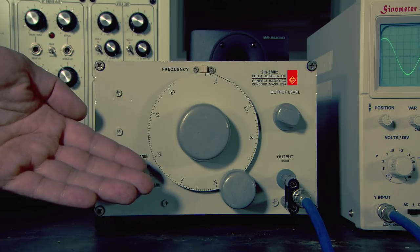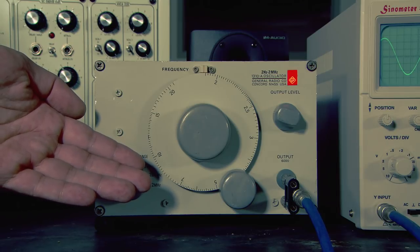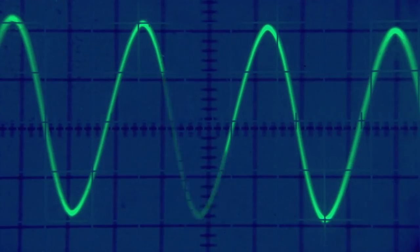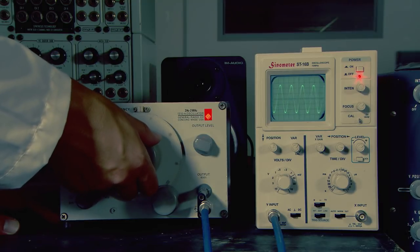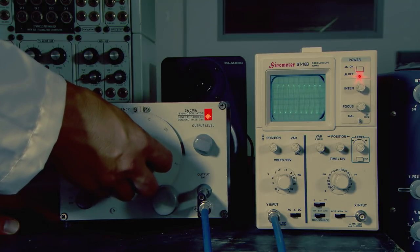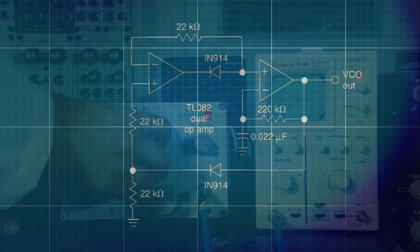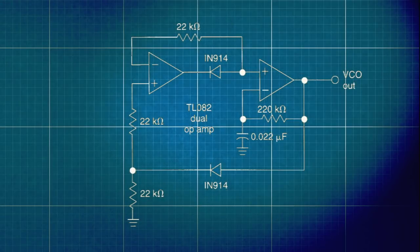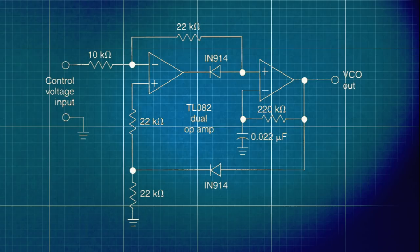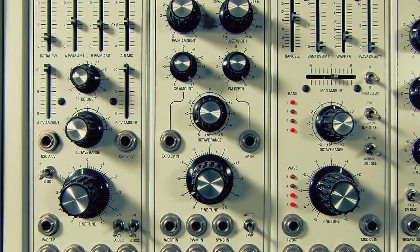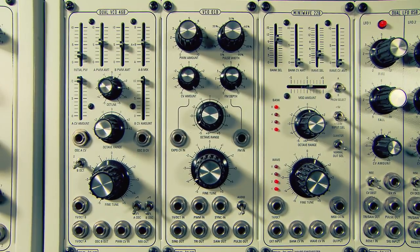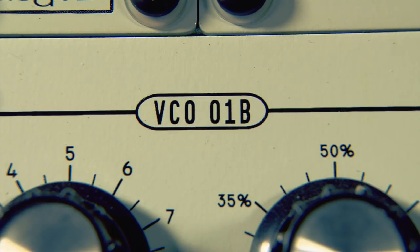This is a typical laboratory oscillator. It produces a pure sine wave tone, which can be controlled using this large knob. If you replace the large knob with voltage control, you can precisely control the pitch. Put the whole thing together, and you have a voltage-controlled oscillator, or VCO for short.